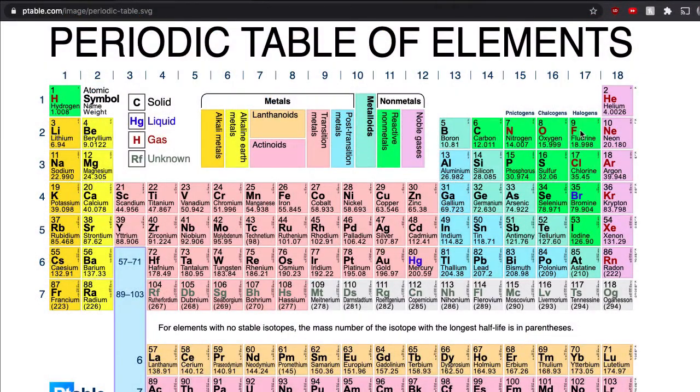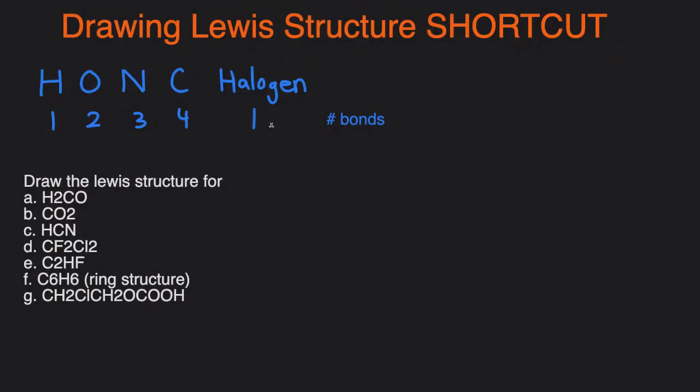The halogens are just the elements in this column right here, like fluorine, chlorine, bromine, and iodine. That's the shortcut, so let's take a look at how to apply this to the examples.